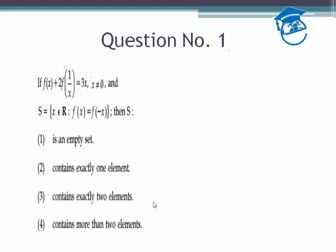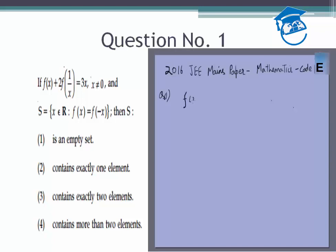So let's start with question 1, or in this case question 61. For a function f(x) we are given f(x) + 2 times f(1/x) = 3x, and x is not equal to 0. So x can take any value other than 0, positive or negative, and then we are asked a question about a set based on this information.